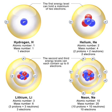Exposure to free neutrons can be hazardous, since the interaction of neutrons with molecules in the body can cause disruption to molecules and atoms, and can also cause reactions that give rise to other forms of radiation. The normal precautions of radiation protection apply: avoid exposure, stay as far from the source as possible, and keep exposure time to a minimum. For other types of radiation, e.g., alpha particles, beta particles, or gamma rays, material of a high atomic number and high density make for good shielding — frequently, lead is used.